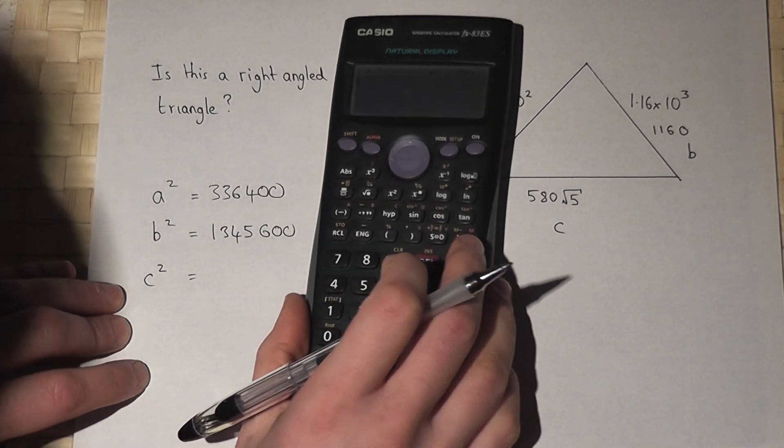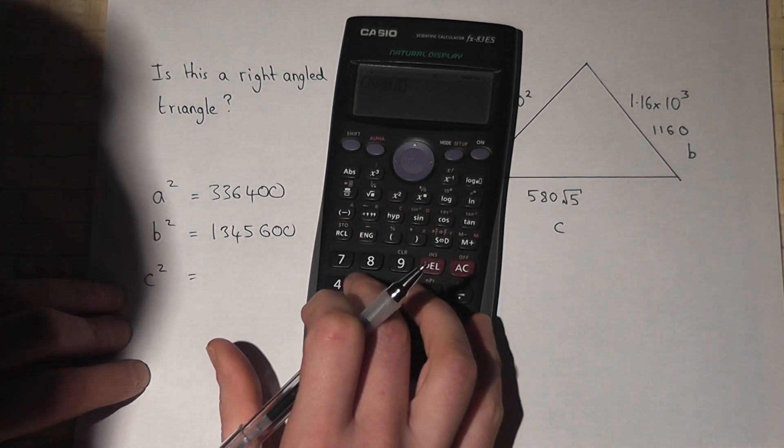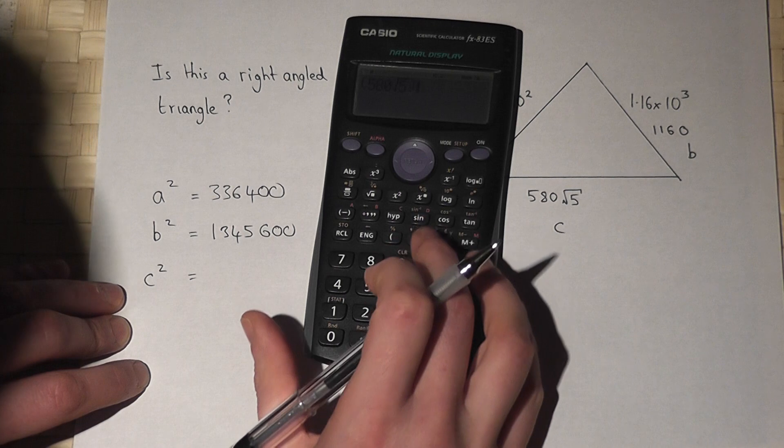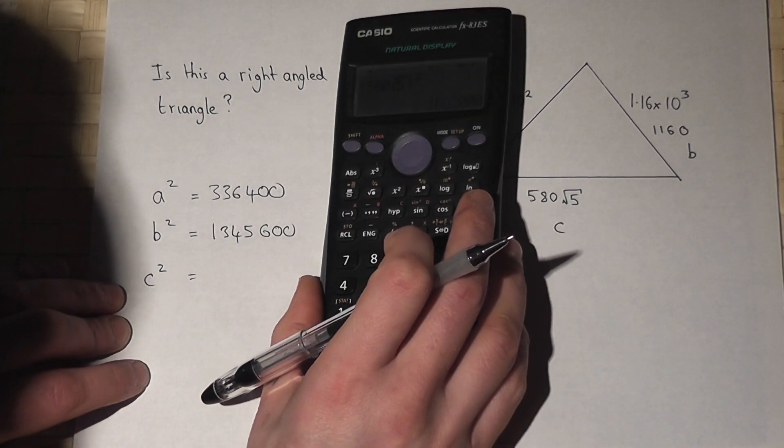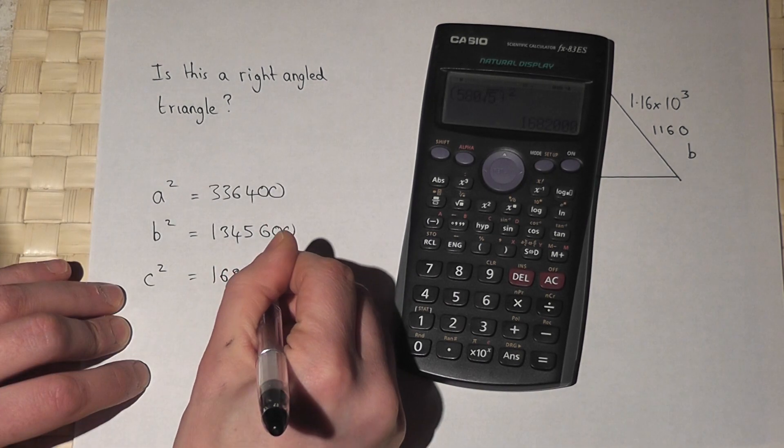To work out c squared, I'll put a bracket, I'll put 580 root 5 across, close bracket, square, and that is 1,682,000.